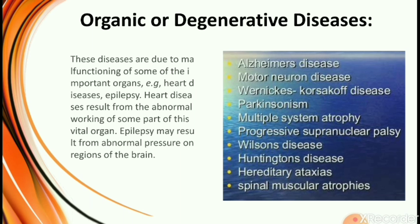Heart disease results from the abnormal working of some part of this vital organ. Epilepsy may result from abnormal pressure on a region of the brain. Some common examples of degenerative diseases are Alzheimer's, motor neurone disease, Huntington's disease, spinal muscular atrophy, and progressive supranuclear palsy.